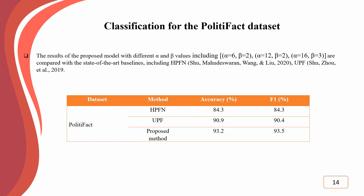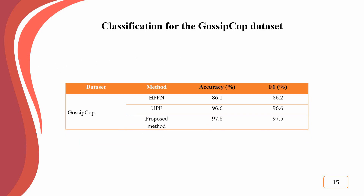We use different values for the alpha and beta parameters to evaluate the proposed model, comparing results against state-of-the-art baselines including HPF-N and UPF. On the PolitiFact dataset, the best accuracy and F1 are achieved with alpha equals 6 and beta equals 2, outperforming baselines by 2.3% and 3.1% respectively. On the GossipCop dataset, the best results are achieved with alpha equals 12 and beta equals 2.2, outperforming baselines by 1.2% and 0.9% on accuracy and F1 respectively.